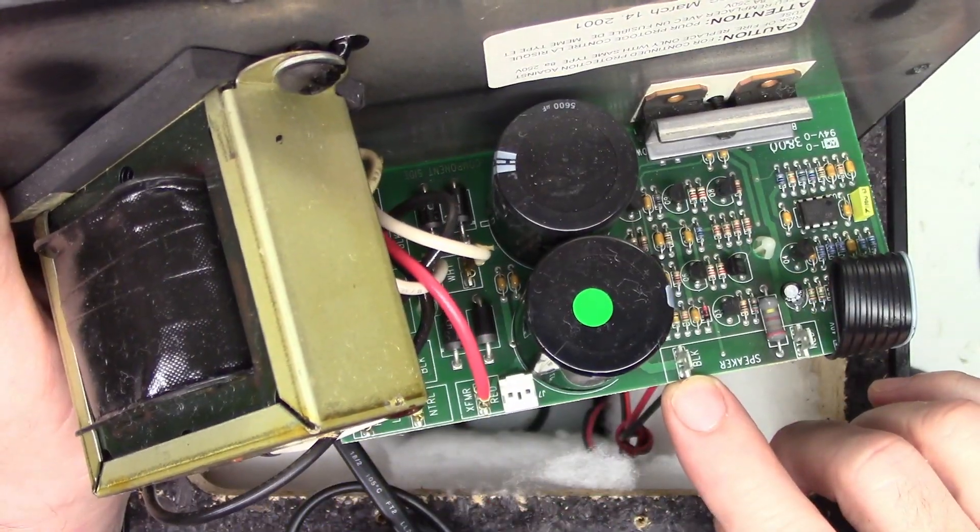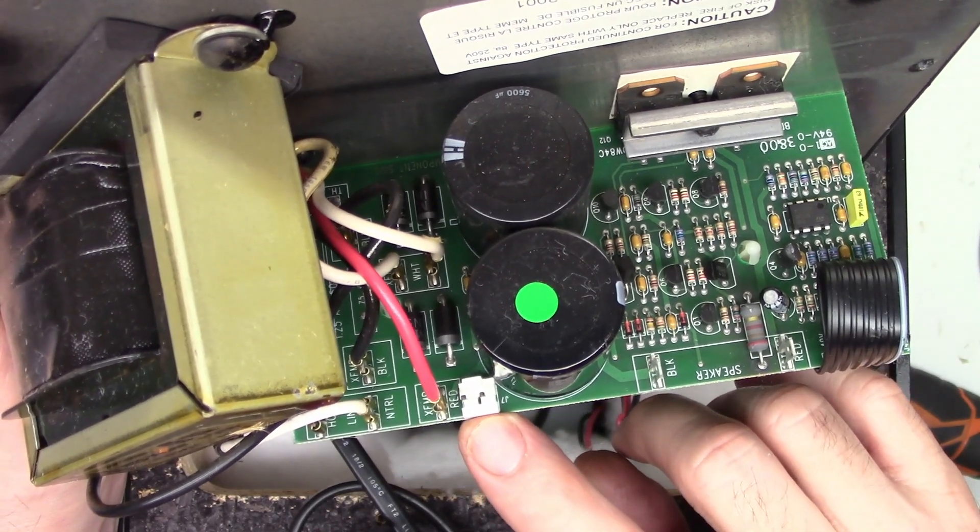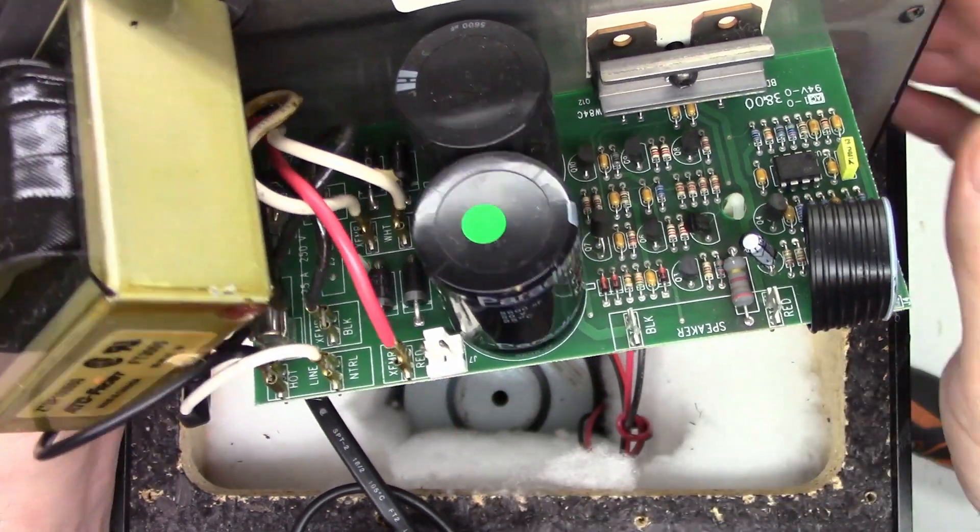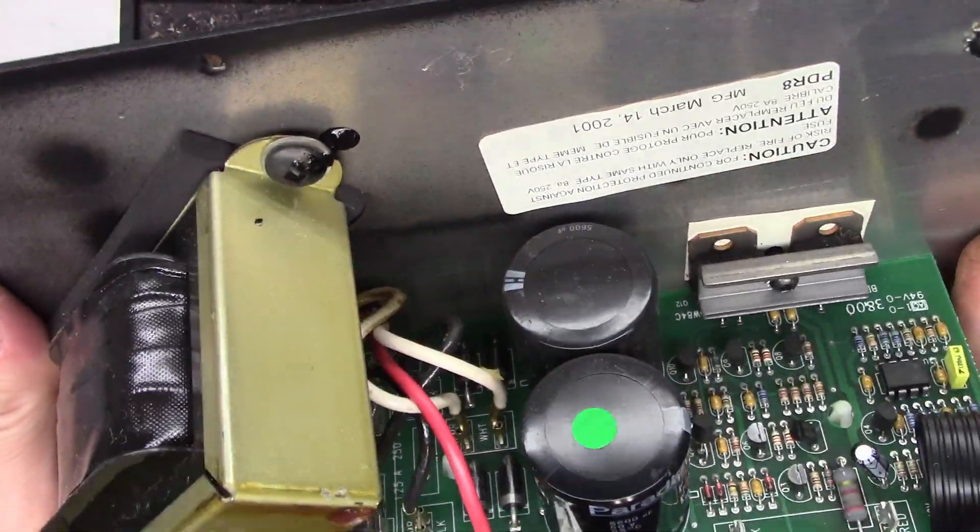So it's conveniently labeled black and red, and then this must be the connection for the LED, maybe a front panel indicator that the unit is actually on. But now that we have the hot plate loose, we can go ahead and try to repair this guy.